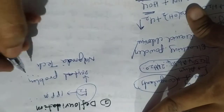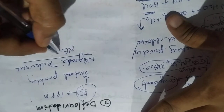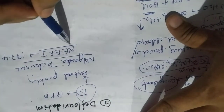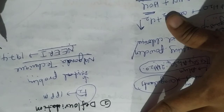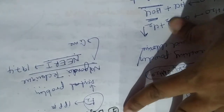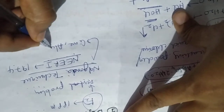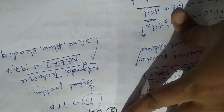The Nalgonda technique was introduced by the National Environmental Engineering Research Institute in 1974. It was first used in Nalgonda, hence the name. In this method, lime (calcium hydroxide), alum, and bleaching powder are all used.